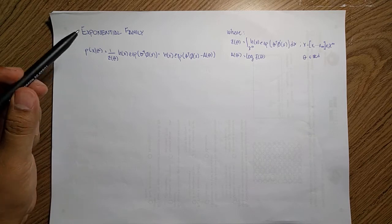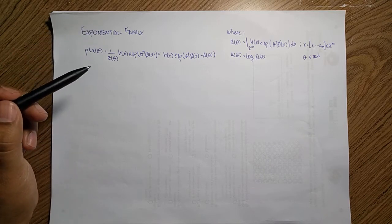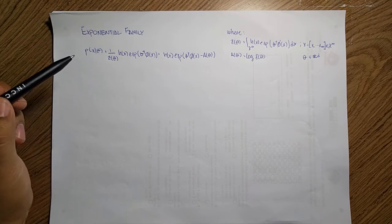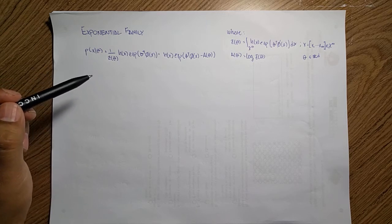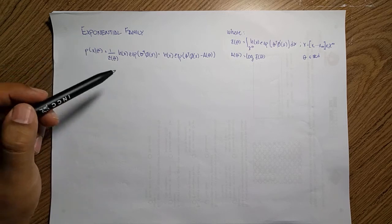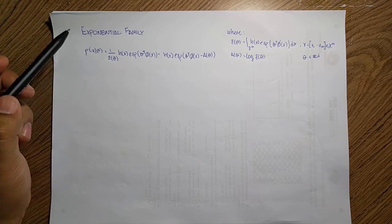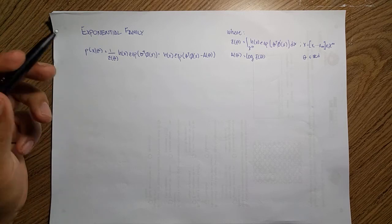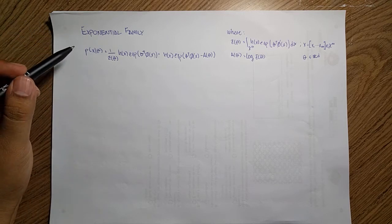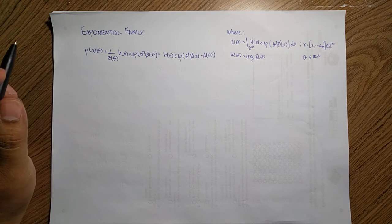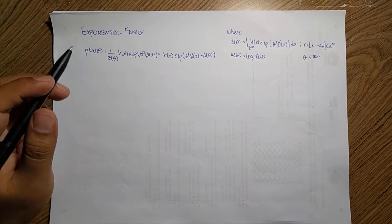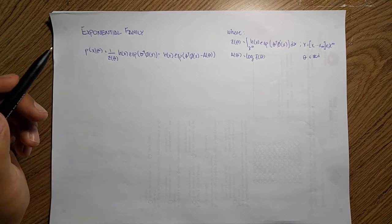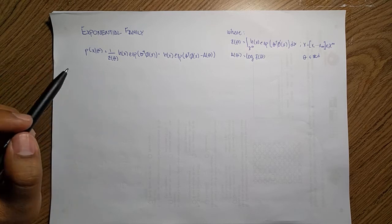This family is a simple generalization of the previous distributions we have seen, and it has a lot of appeal because it is really easy to model and it is itself conjugate. So you have a lot of tricks you can play when working with this type of distribution, because you don't have to worry about finding the conjugate of other ones. We will see that most of the distributions we have worked with belong to this exponential family, and we can change their particular form to adjust to this one.